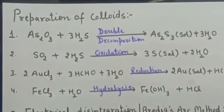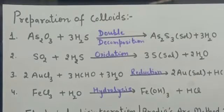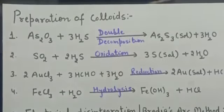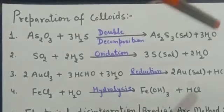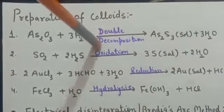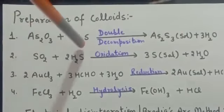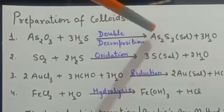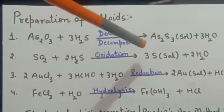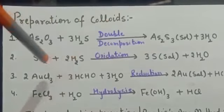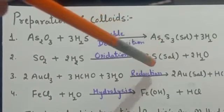As we have discussed, lyophilic colloids do not need any special method for their preparation, whereas lyophobic colloids need special methods. The first method: arsenic sulfide sol can be prepared by double decomposition — treating arsenous oxide in the presence of H₂S gives arsenous sulfide sol. Second, colloids can be prepared by oxidation reaction; for example, sulfur sol can be prepared by passing H₂S gas through SO₂.